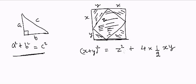Right? So now if you calculate this, that will be equal to X square plus Y square plus 2XY equals Z square plus 2XY.